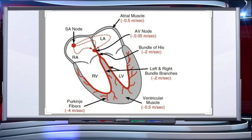A bundle of nodal fibers, the atrioventricular bundle or AV bundle, continues from the AVN, passes through the atrioventricular septa to emerge on top of the interventricular septum, and immediately divides into right and left bundle branches. These branches give rise to minute fibers throughout the ventricular musculature of the respective sides, called Purkinje fibers. These fibers along with the right and left bundles are known as the Bundle of His.